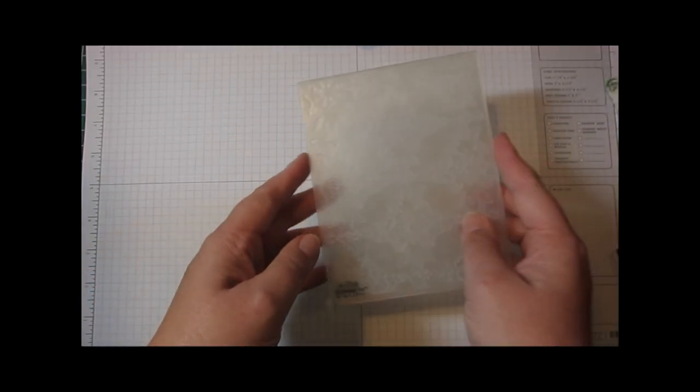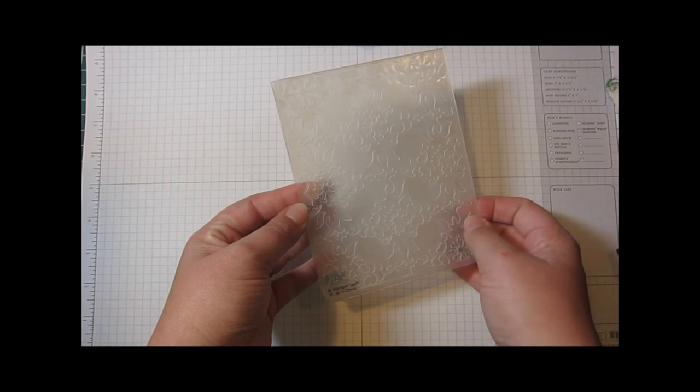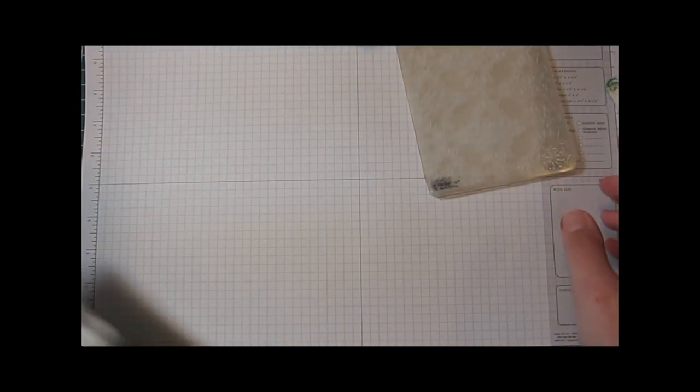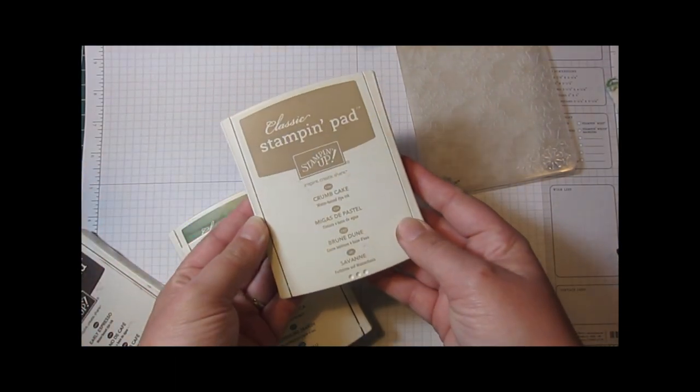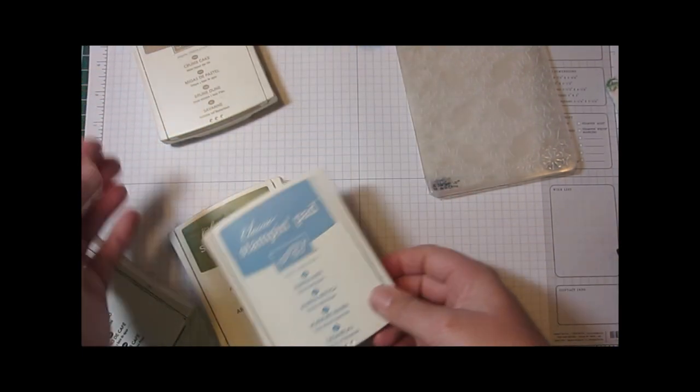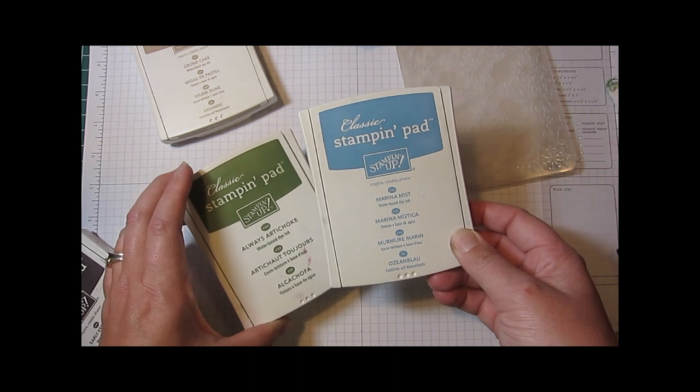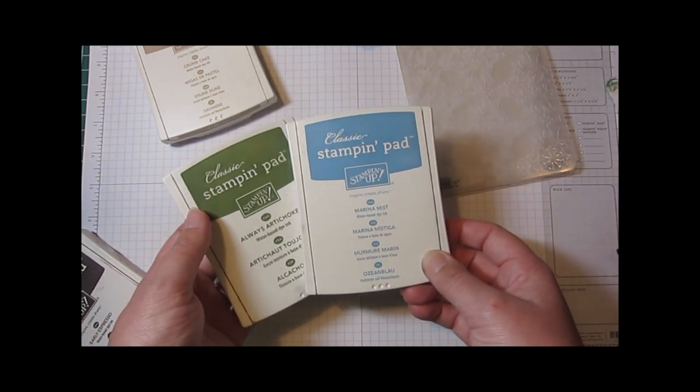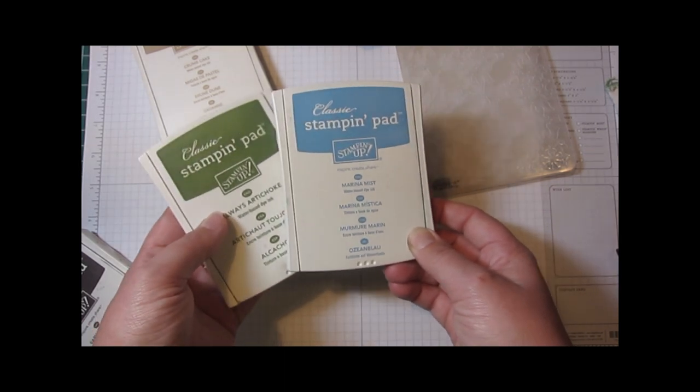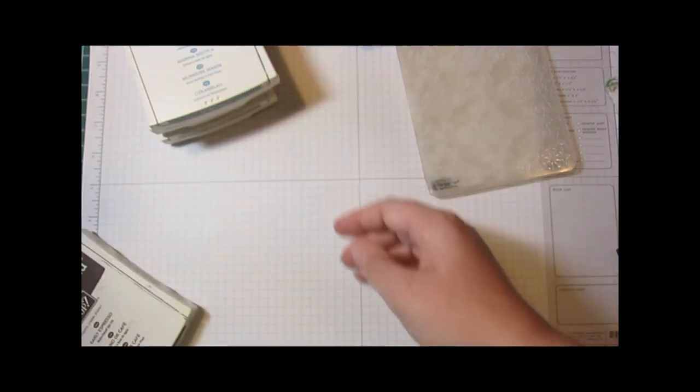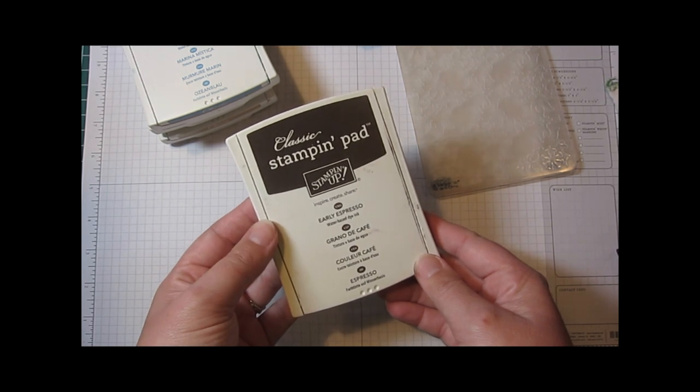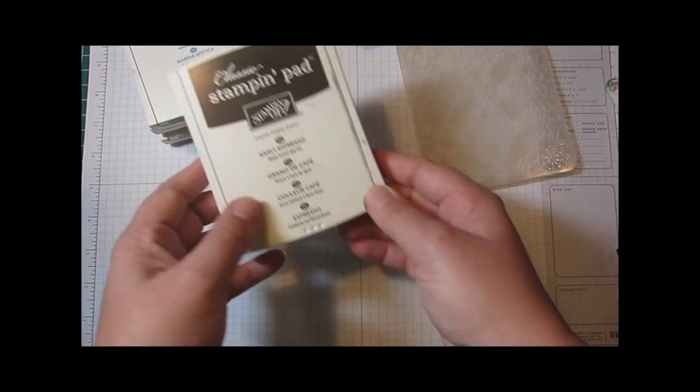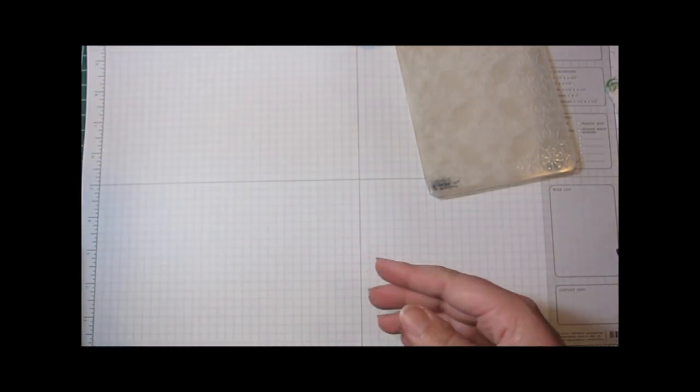Let's get started by showing you all the supplies that you're going to need for this project. First you're going to need an embossing folder and of course the Big Shot to go with that. Next you're going to need four different colors of inks. First you want to have a neutral light color, then two medium colors. If you're looking for the traditional aqua color of patina then you'll want to make sure you have some sort of blue and a green because that will mix together to make that color. And then your final color is any kind of a dark color. I'm using a dark brown here but any kind of dark gray or black is also going to work really well.